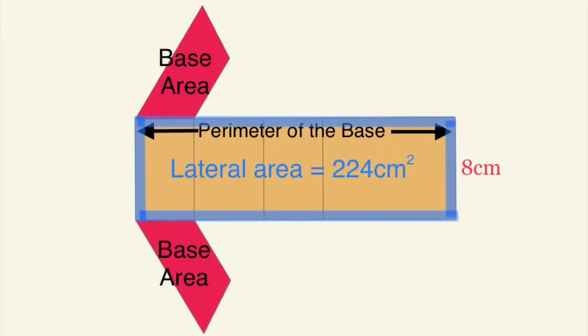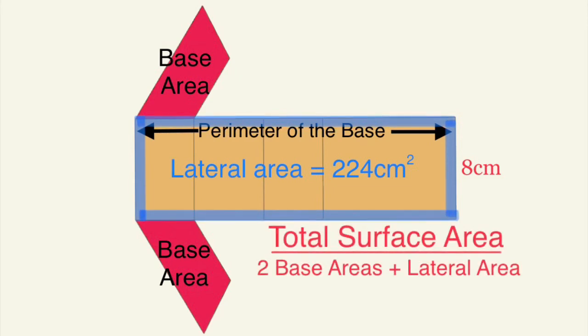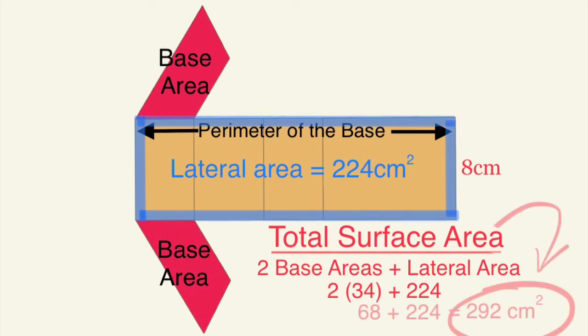Now to find the total surface area you would still have to add in the area of those two bases. So I'd still need the trapezoid area which in this case I just said was 34. You'd still have to calculate it, if you double it you'd get 68 and then you could add it to find the total surface area.